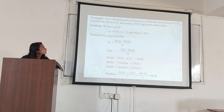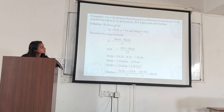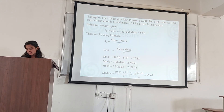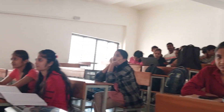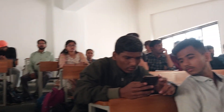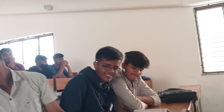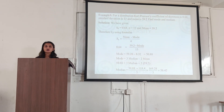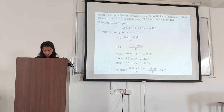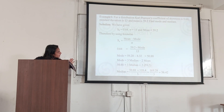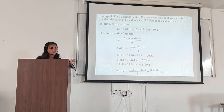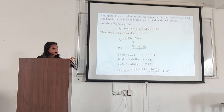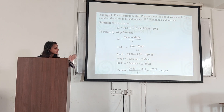For an example: for a distribution, the kurtosis of skewness is 0.64, standard deviation is 13, and mean is 90. We calculate Sk equals mean minus mode divided by standard deviation. So Sk is 0.64, mean is 90, mode is 59.2, and standard deviation is 30.